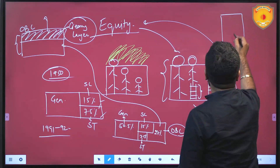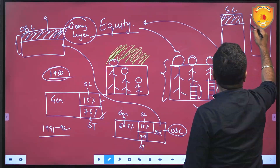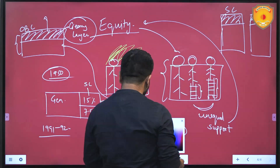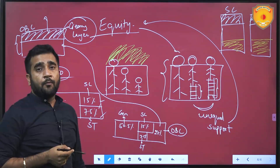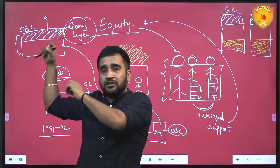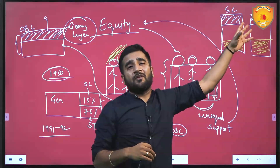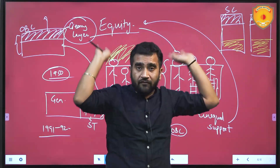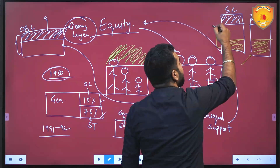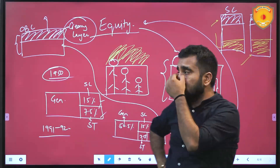Within SC and ST, we will identify the creamy layer and the bottommost rung which has not received reservation benefits. The key difference from OBC is that in OBC the creamy layer is excluded from reservation entirely, but for SC and ST, those in the creamy layer will still receive reservation — just fewer benefits. The most deprived will get more benefits and the creamy layer will get less. This is the main purpose of sub-categorization in SC and ST as per this Supreme Court judgment.